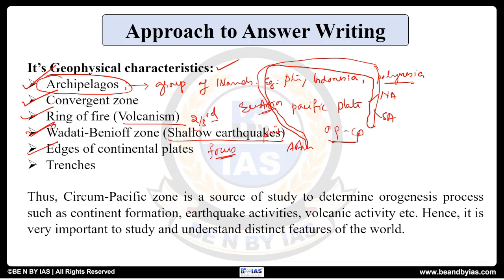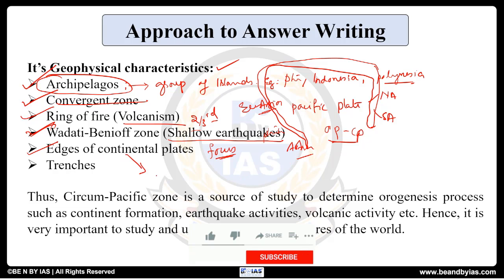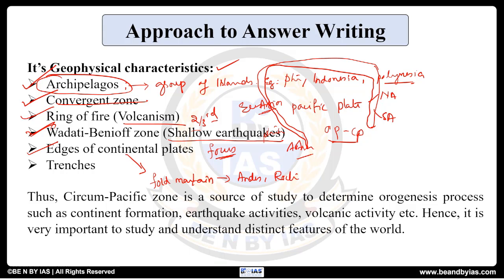That is also one of the characteristics. Then — edges of the continental plates — because there is a lot of convergence, many continental plate edges are formed here. That is another geophysical characteristic. Also, fold mountains form here: because of the edging of plates, there are so many fold mountains — you clearly need to mention examples such as the Andes and the Rockies. These are examples of fold mountains formed in this zone.